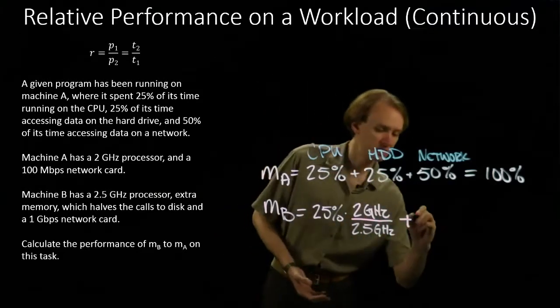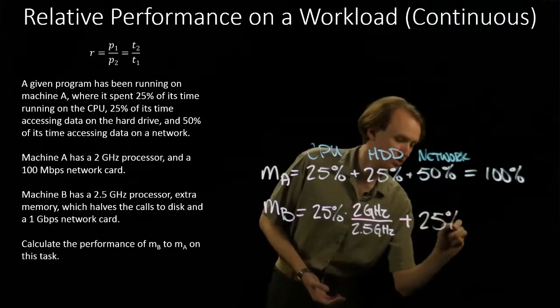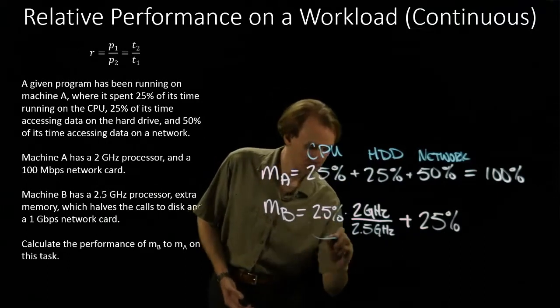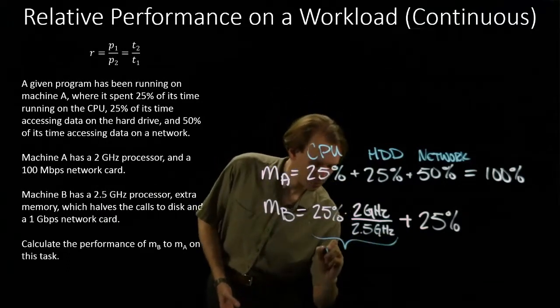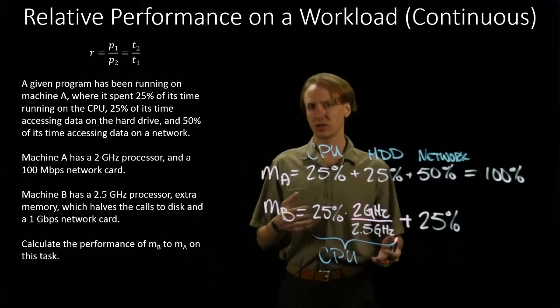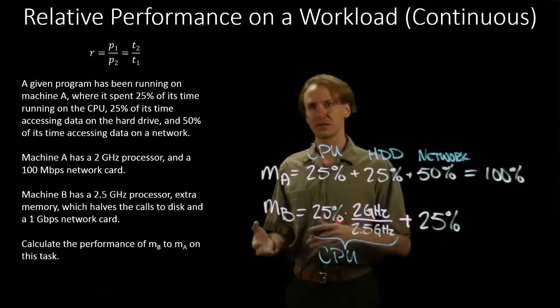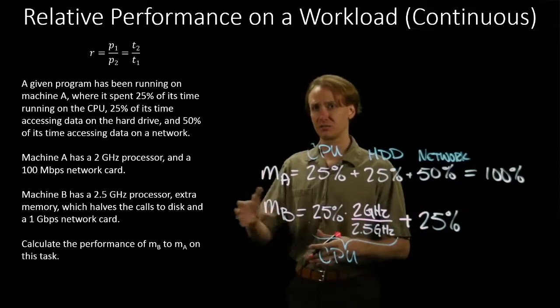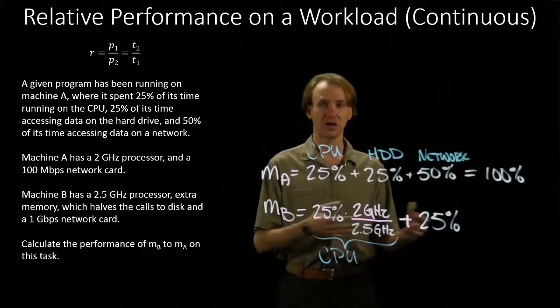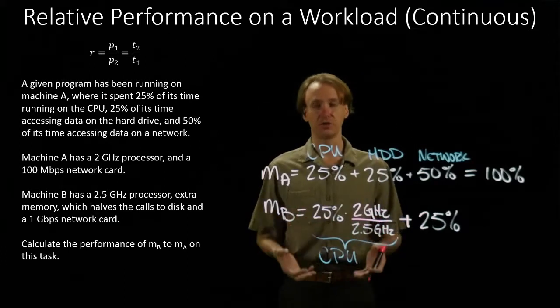Now I need the hard drive term. Again, that's 25% of the original computation. So this time we're looking at the memory, actually, instead of the hard drive. In this case, our memory is going to be cached in machine B. Our memory can cache extra information. So that means we're spending less time accessing the hard drive. We're ready to return that information to the CPU more often.